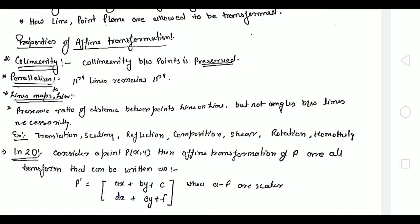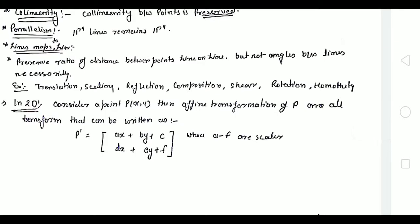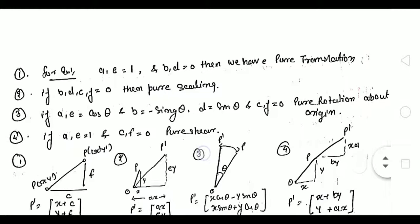So how can we use affine transformation in 2D? Consider a point P(x, y). Then the affine transformation of P can be written as: P' = (ax + by + c, dx + ey + f), where for x: ax + by + c, and for y: dx + ey + f, where a to f are scalar quantities.